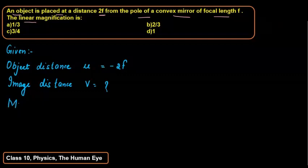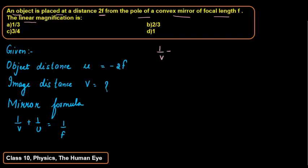Now we have to apply here mirror formula, so that we will get our answer. So here mirror formula, what happens? 1 upon v plus 1 upon u equals to 1 upon f. So the values we have to fill first, so that it could be 1 upon v plus u value minus 2f equals to 1 upon f.